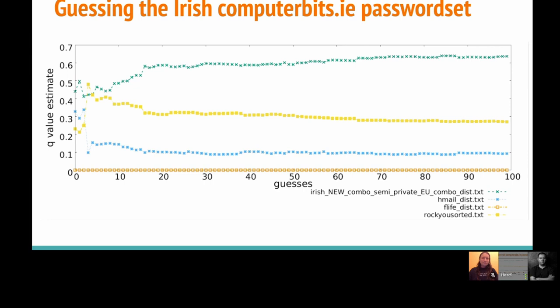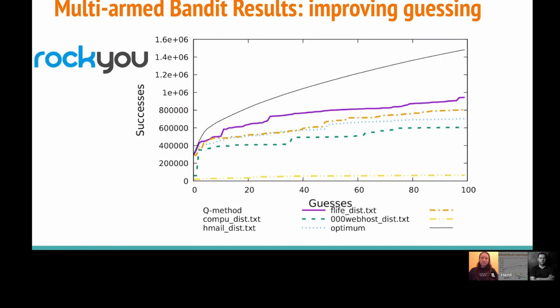The last thing I want to talk about is improving password guessing. What we did is we wanted to guess the RockYou password set and check that it was better to use the multi-armed bandit model than using just individual password sets. So we guessed it using ComputerBits, Hotmail, FlirtLife, and Webhost. The purple line is our Q method, which takes the weightings from all four dictionaries and then guesses using the best one — so we're getting the same input guesses, just ordering them in an effective way. It's interesting because Webhost is really bad and FlirtLife is really quite good, and yet the combination of the four is still the most effective.